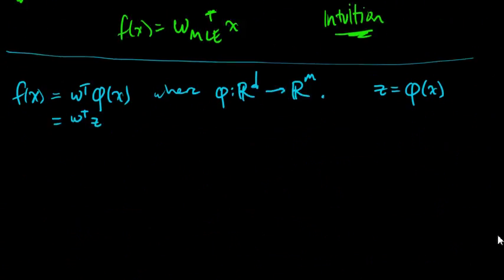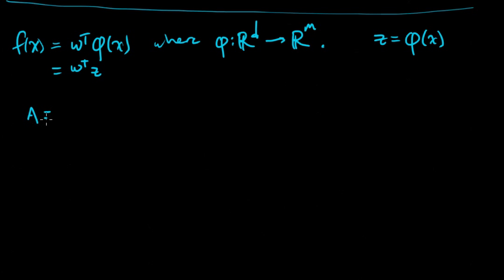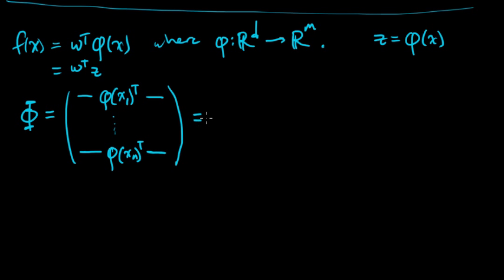So back down here, the design matrix when we're using basis functions—let's write it a different letter, sometimes people use a capital phi for the matrix—phi x1 transpose, so that's the first row, down to phi of xn transpose. So it's just z1 transpose to zn transpose, that's all.